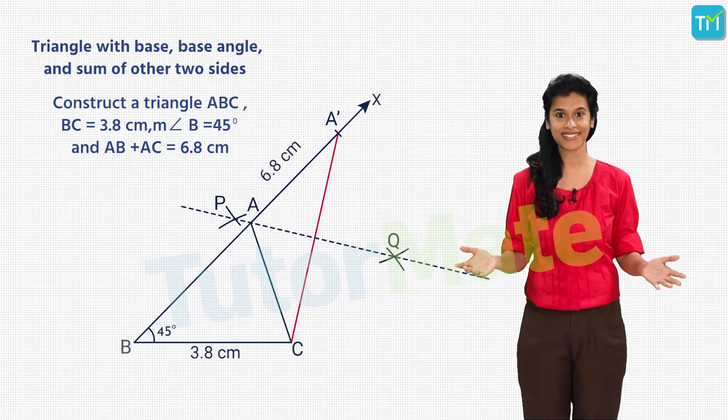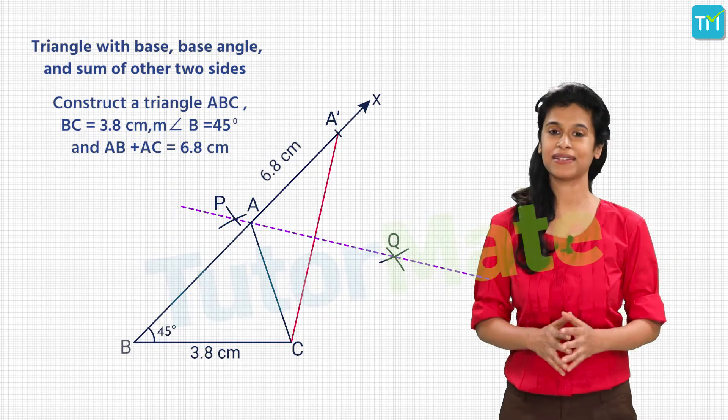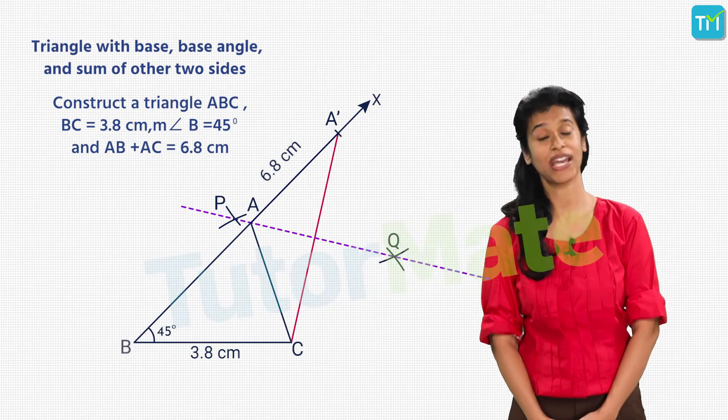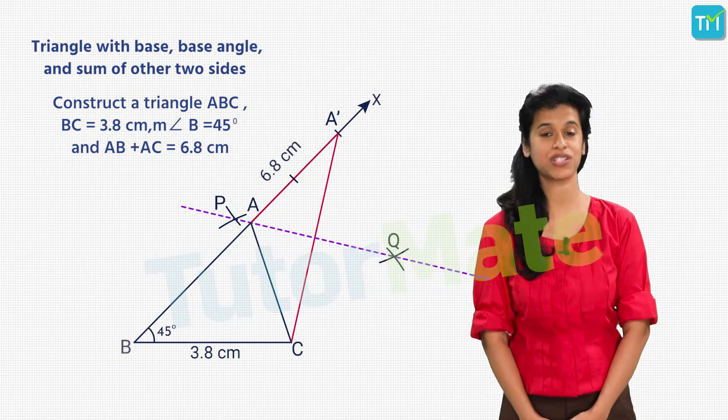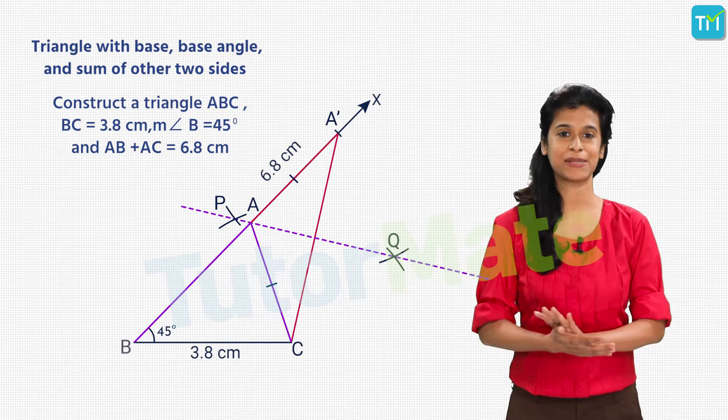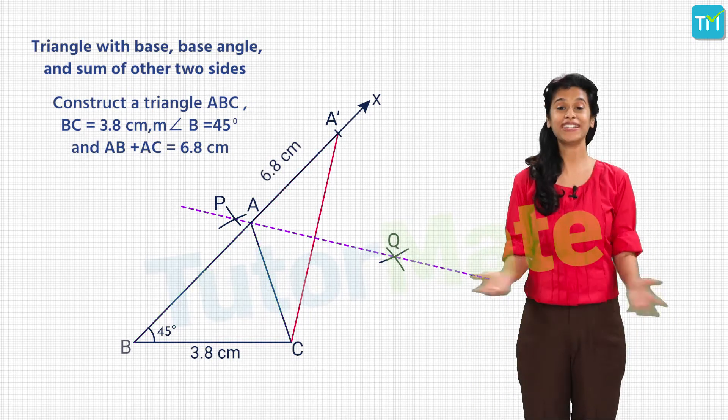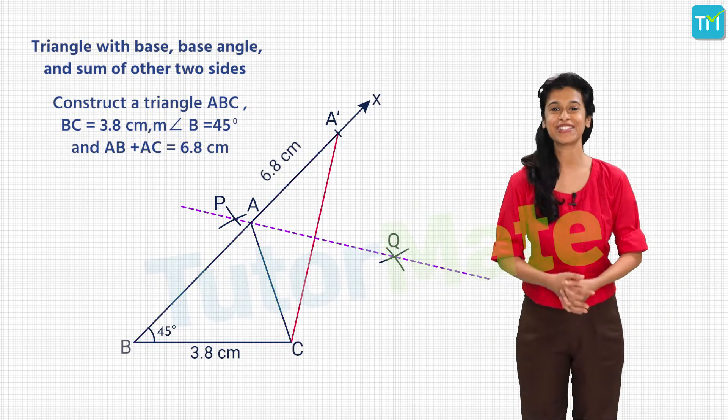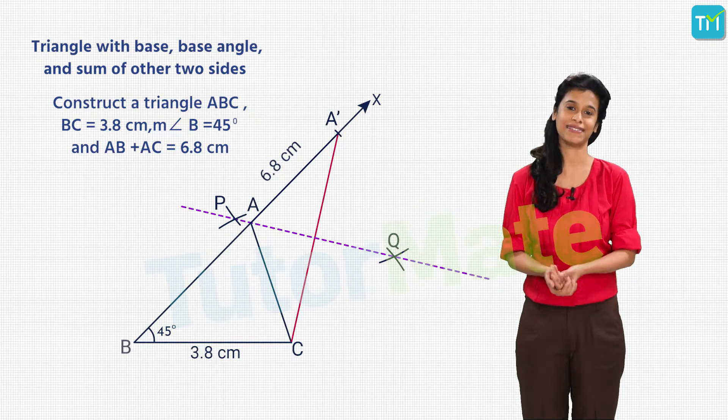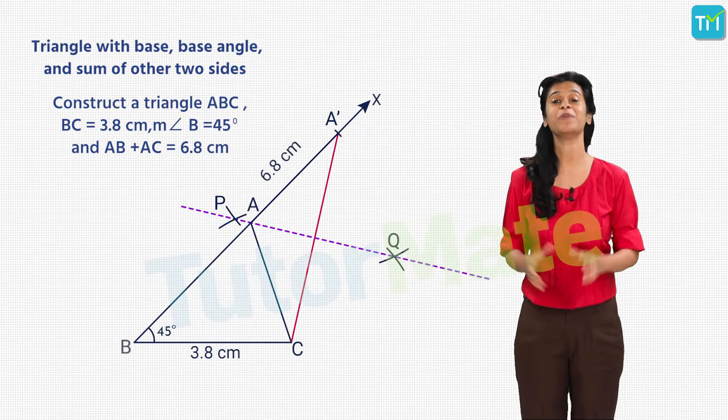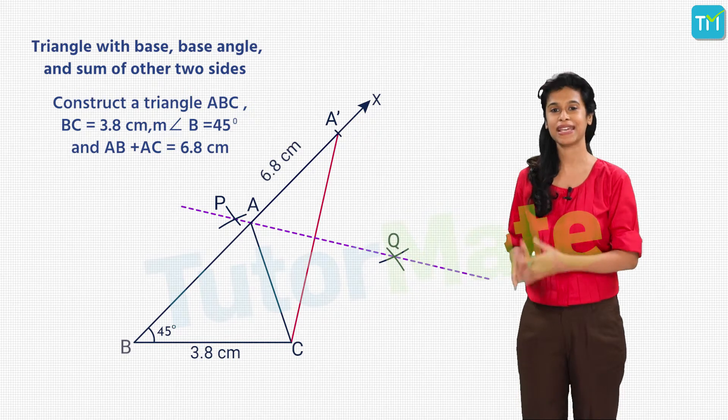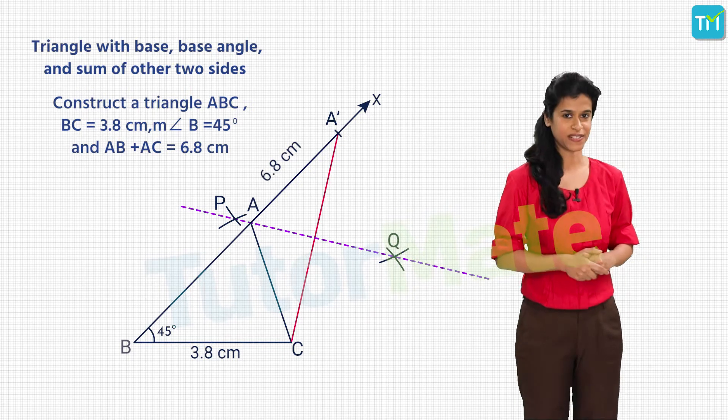Did you get how that worked? Since PQ is a perpendicular bisector, any point on it is equidistant from C and A dash. Hence, AA dash is equal to AC which will make AB plus AC equal to 6.8. Ingenious, isn't it? Once the solution is in front of you, we are left wondering why we didn't think of it ourselves. I know that happens. To verify, measure AB and AC to confirm that AC plus AB is equal to 6.8 centimeters.